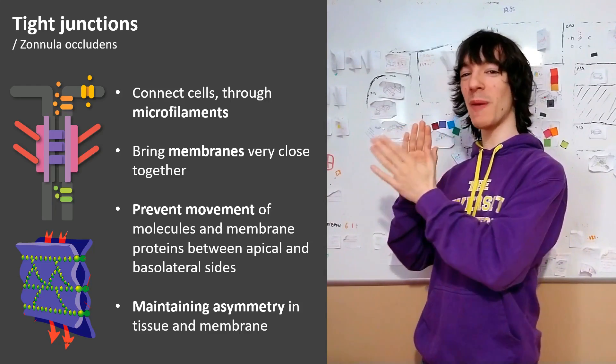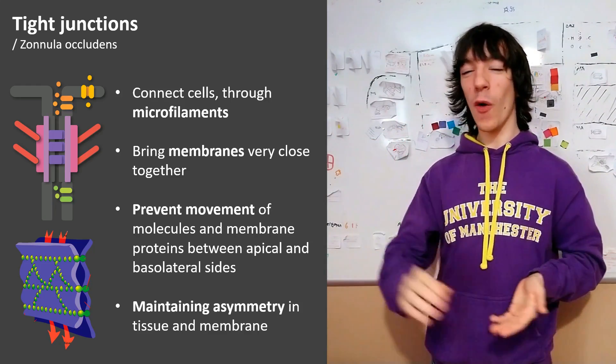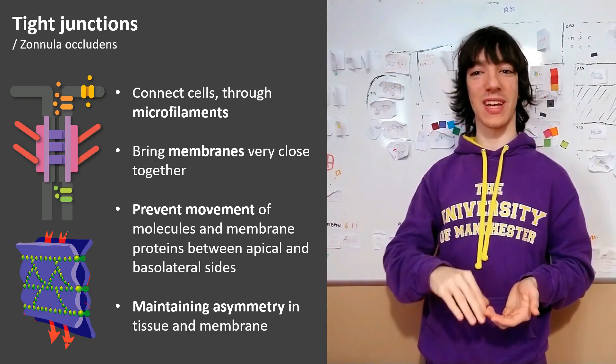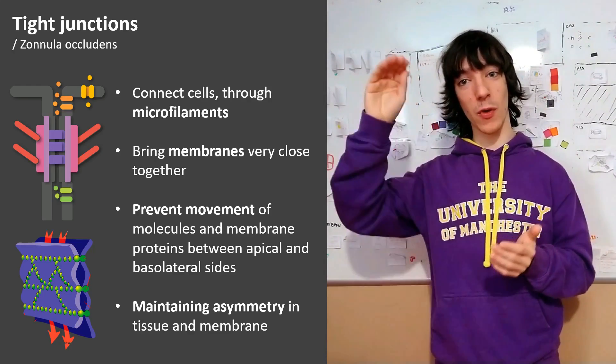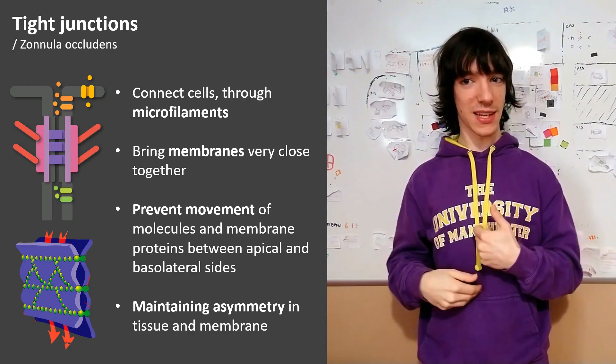In fact, they are the closest to the apical side kind of junctions. All of the other ones are below the tight junctions, in cells with apico-basal polarity, like the cells in our intestines.